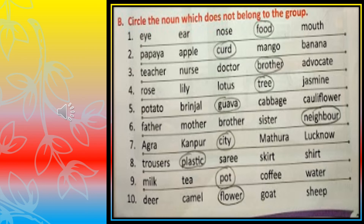Milk, tea, pot, coffee, water — all are liquid or drinkable things. We can drink milk, tea, coffee and water, but we cannot drink pot, so pot is different and we will circle it. Deer, camel, flower, goat and sheep — all are names of animals; only flower is different, so we will circle flower.